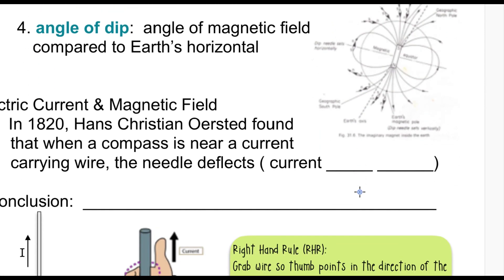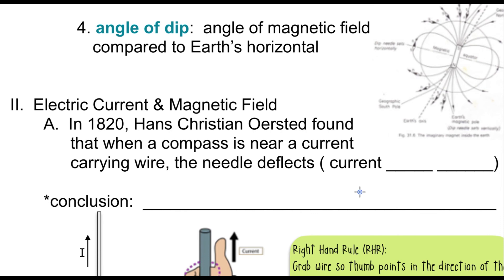Another effect is dip. Looking at a map of field lines: at the equator, a compass is parallel to the horizon. But at other latitudes, the field dips into the Earth, so the compass tilts at an angle relative to the horizon. At magnetic north, the compass would dip straight down into the Earth.